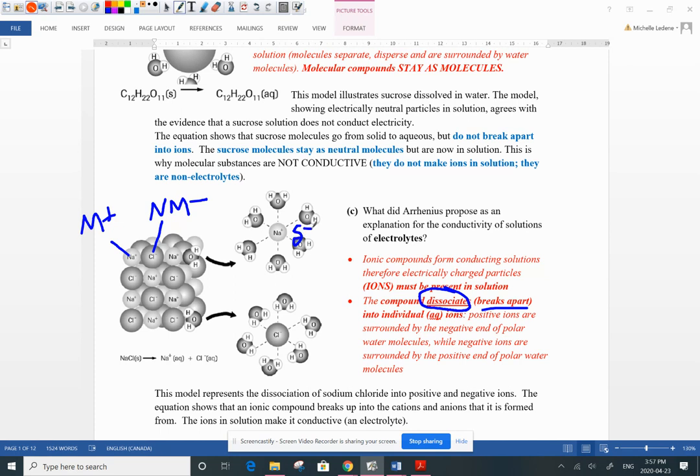The negative end of that water molecule is attracted to those positive ions and then the positive hydrogen end of the water molecule is attracted to the negative ions. So we see that ionic compounds already made of ions dissociate. They break apart into their ions in solution. So now that you have ions in solution it's going to conduct. Now you have an electrolyte solution.